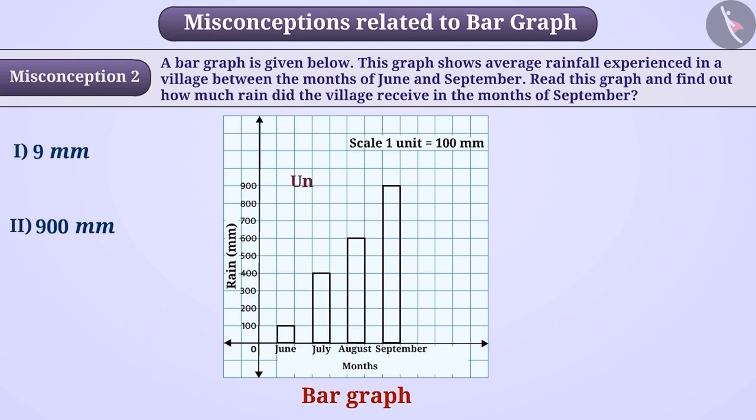Some students ignore the unit given in the bar graph and answer by counting only the boxes. Like here, they obtain the answer 9 mm, which is a wrong answer.